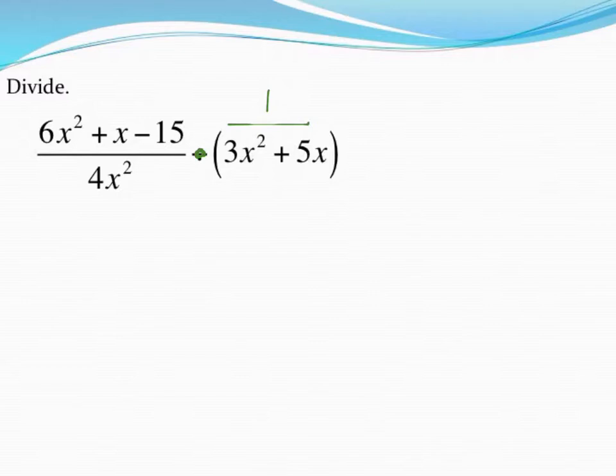Normally, yes, that 1 would be underneath the 3x squared plus 5x part. However, since I knew I was going to end up flipping that, the 1 would end up on top.